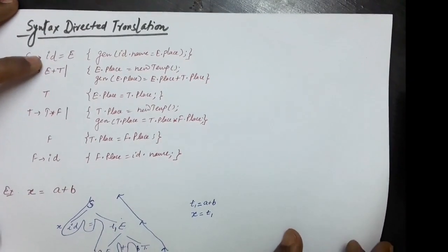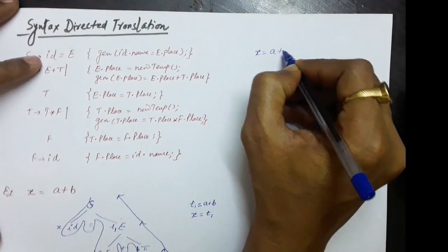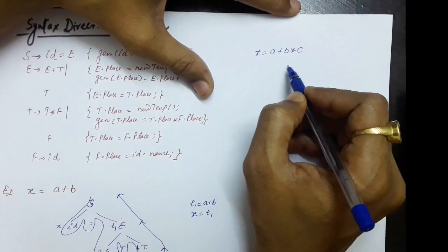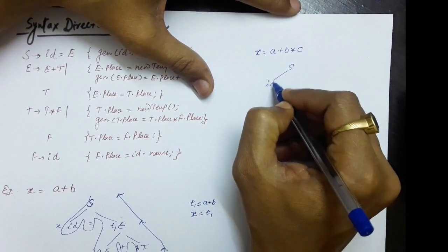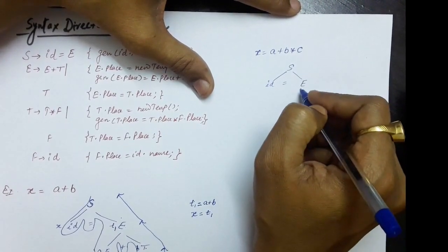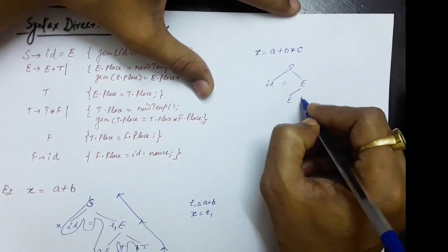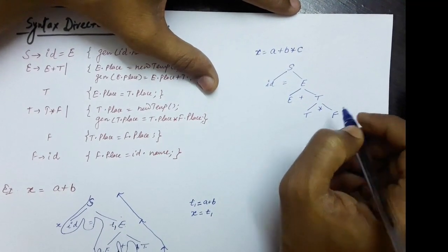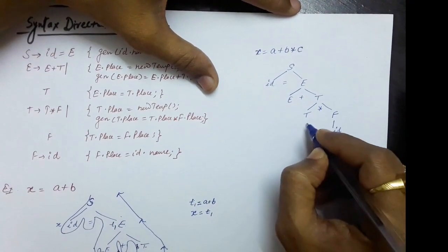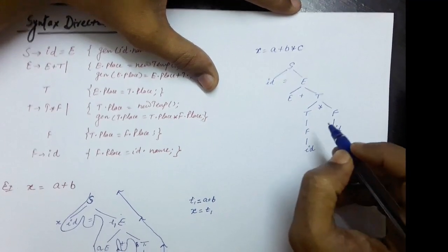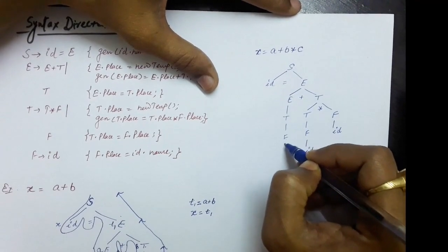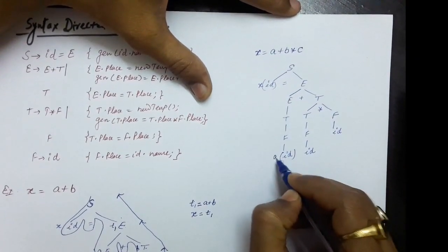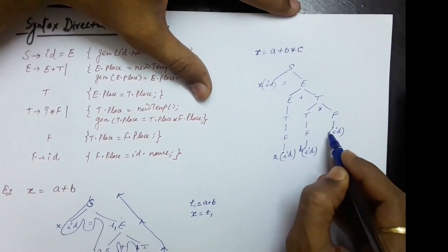Let us take one more example: x equals a plus b multiplied with c. For this expression, the parse tree is: S produces id equals E, then E produces E plus T, T produces T star F, F produces id for 'c'. Then T produces F, F produces id for 'b', and E produces T, T produces F, F produces id for 'a'. This id is x, this id is a, this id is b, and this id is c.